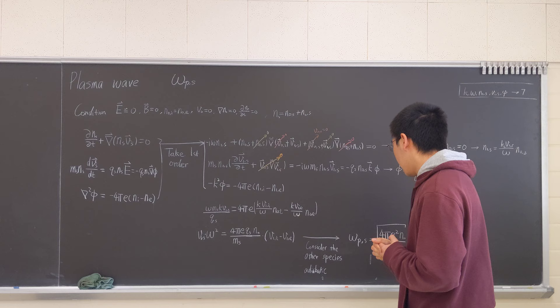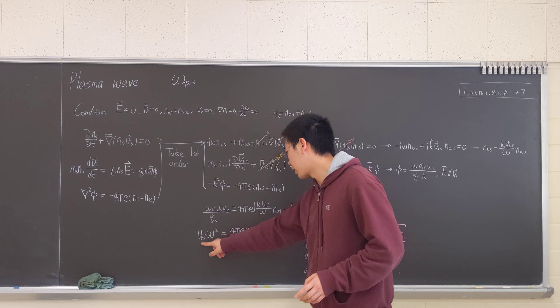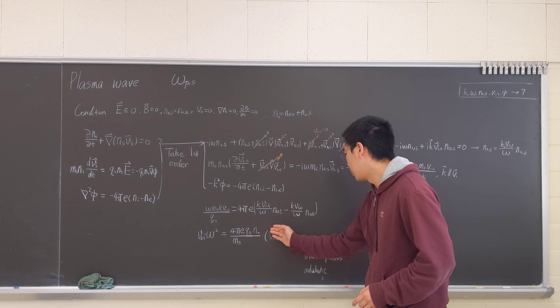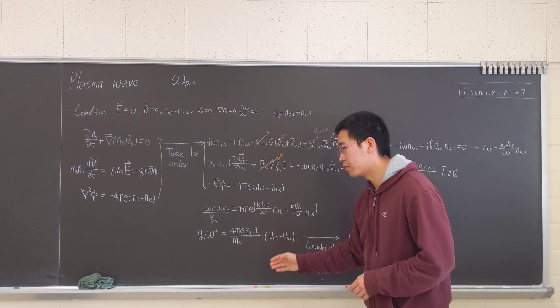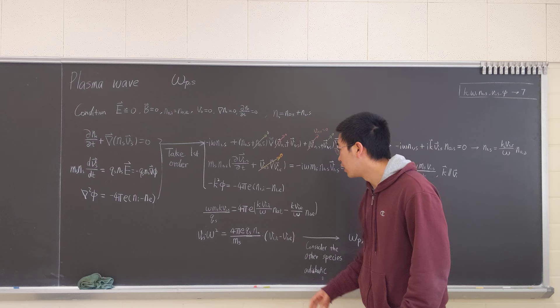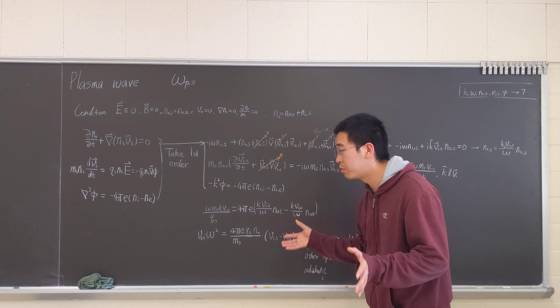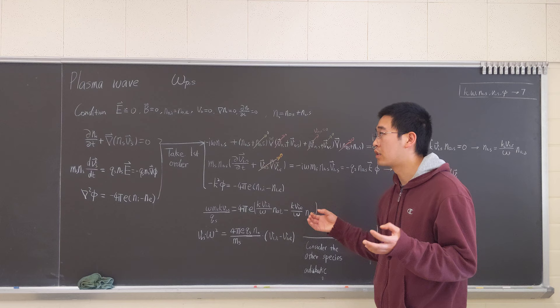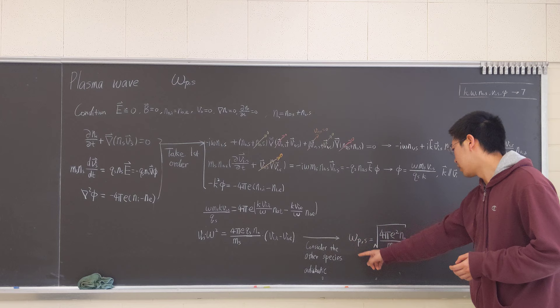So we consider the other species adiabatic. For instance, if I consider this as the wave, then we consider the ion adiabatic. So adiabatic means it doesn't move, it moves along the field line, it moves with the electric potential so that it doesn't create additional charge separation. So we want to have this for both species.